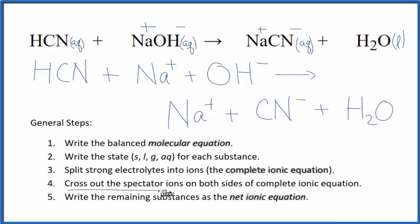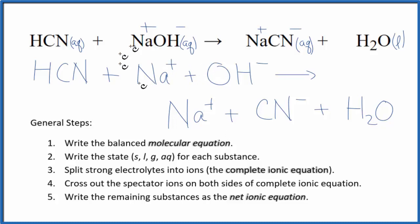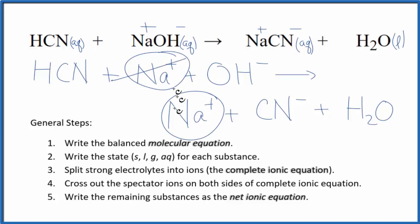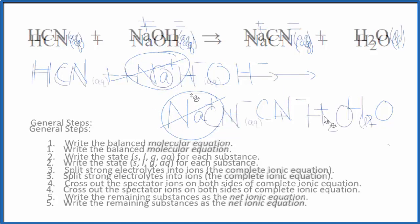So this is our complete ionic equation. Now we can cross out spectator ions — they're on both sides of the complete ionic equation. The only thing I see that's the same in the reactants and the products is that sodium ion, Na+. So I can cross that out. What's left will be my net ionic equation for HCN plus NaOH. I'll clean it up and write the states in.